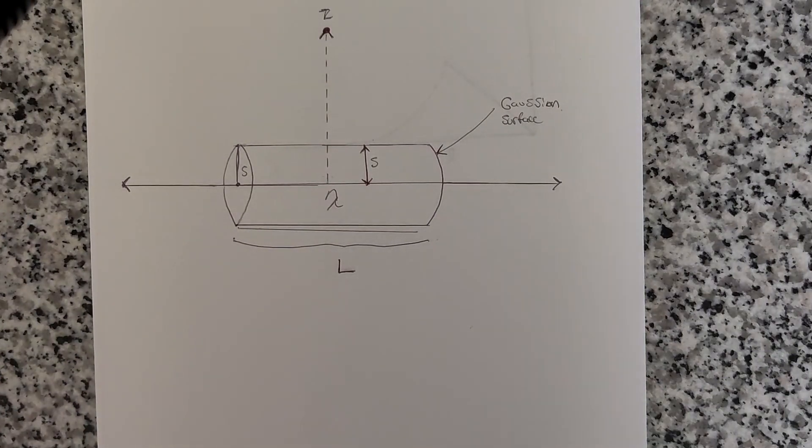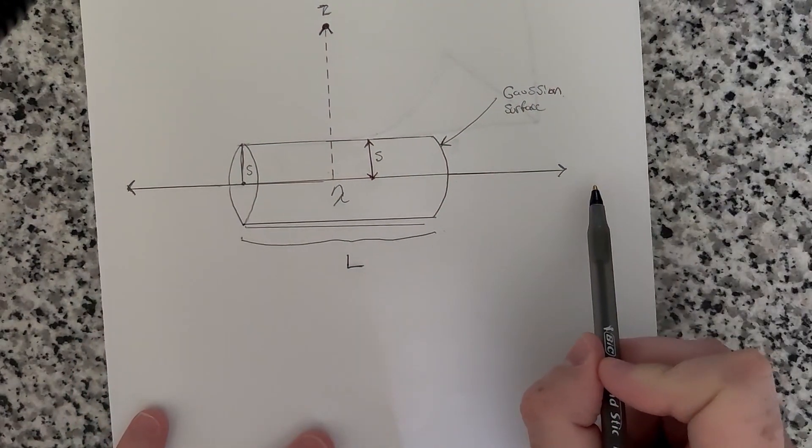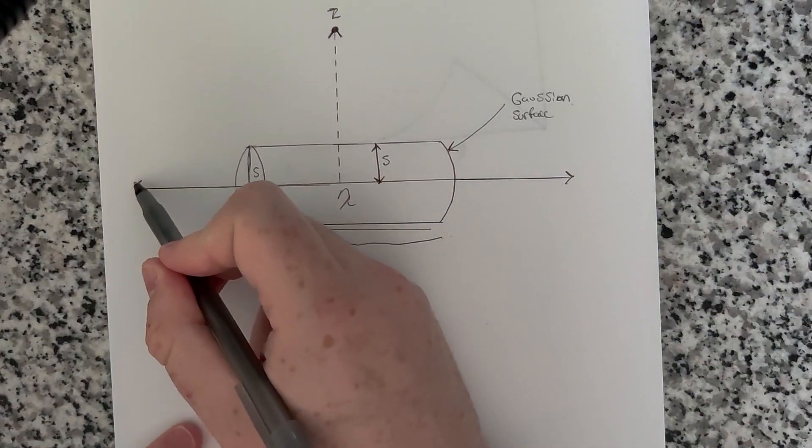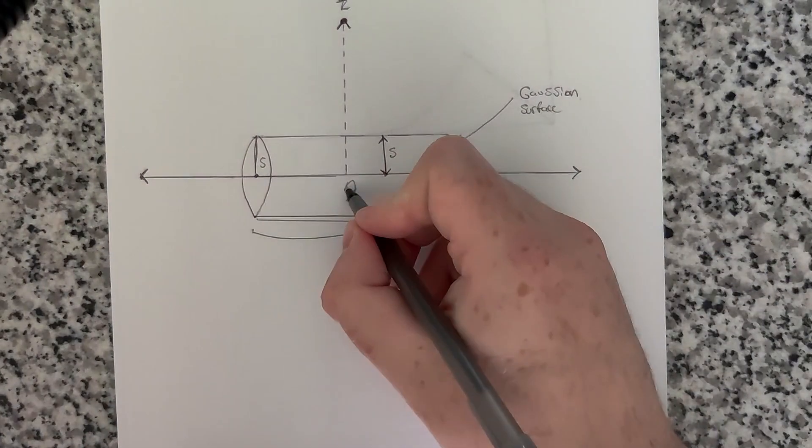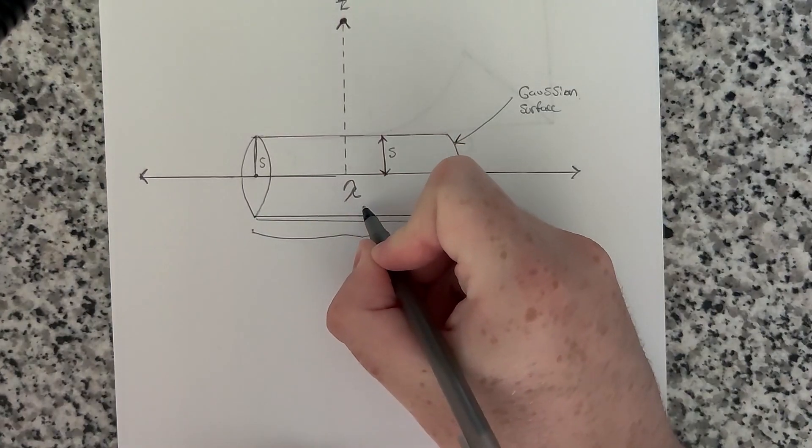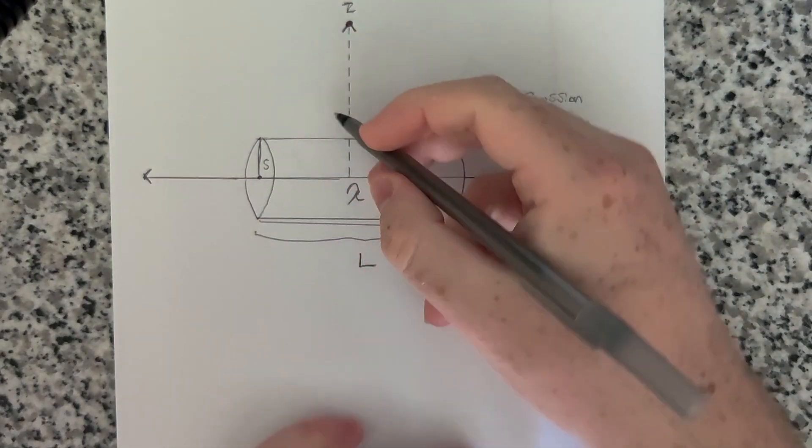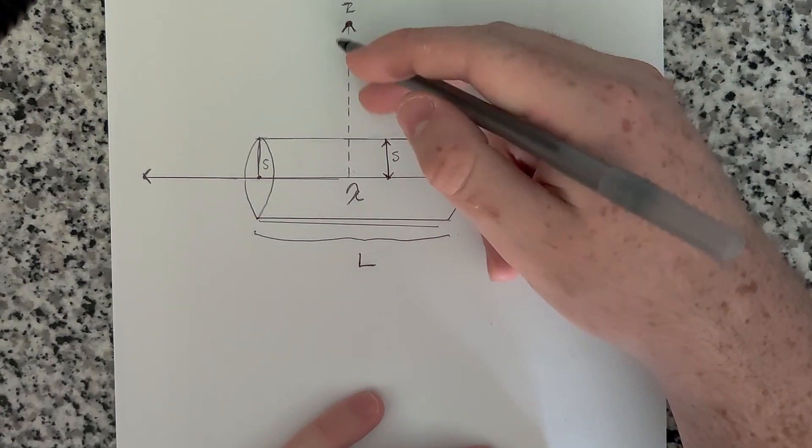So 2.13 asks us to find the electric field a distance s from an infinitely long straight wire that carries a uniform line charge of lambda. I've drawn a uniform line charge here that's infinitely long with arrows at the end to indicate that the line of charge continues in both directions. I've denoted that the charge density on the wire is lambda, so it has a uniform charge density. And I've just picked some arbitrary point along the wire to put an axis here.